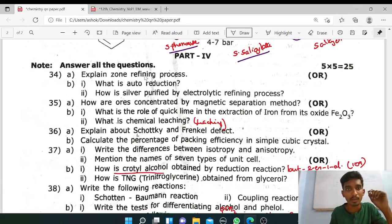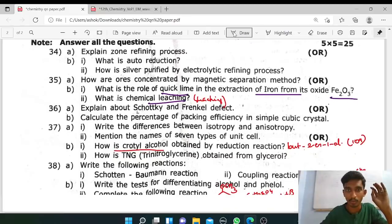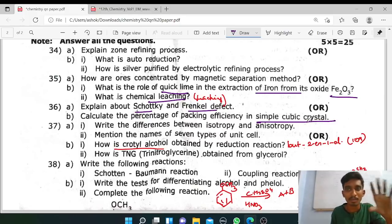Next is zone refining process, five mark. Auto reduction and electrolytic refining, so two are easy. Magnetic separation is like this, diagram is needed. This is the role of quicklime in extraction of iron from its iron oxide, book back. Chemical leaching is the leaching, definition. Next, Schottky and Frenkel defect is very easy. This is the packing efficiency in simple cubic crystal: BCC is simple cubic crystal, definition, 52.38.